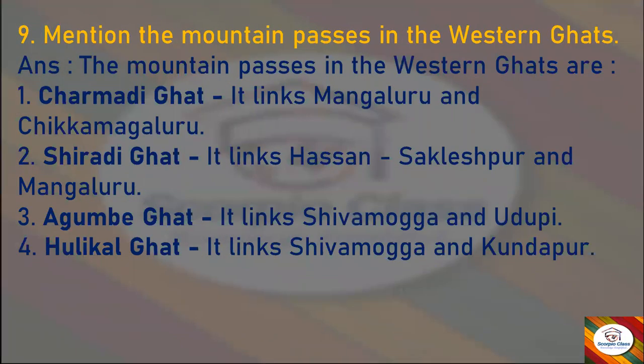Mention the mountain passes in the Western Ghats. Answer: The mountain passes in the Western Ghats are: Charmadi Ghat, which links Mangaluru and Chikamangaluru; Shiradi Ghat, which links Hassan, Sakleshpur, and Mangaluru; Agumbe Ghat, which links Shivamogga and Udupi; and Hulikal Ghat, which links Shivamogga and Kundapur.